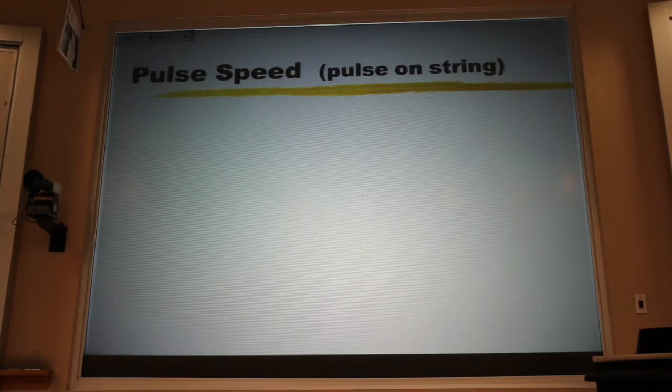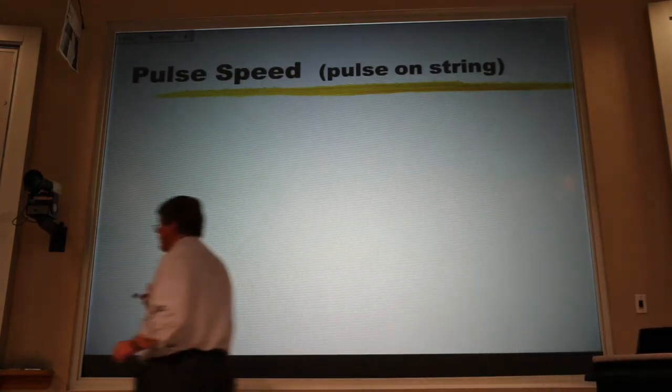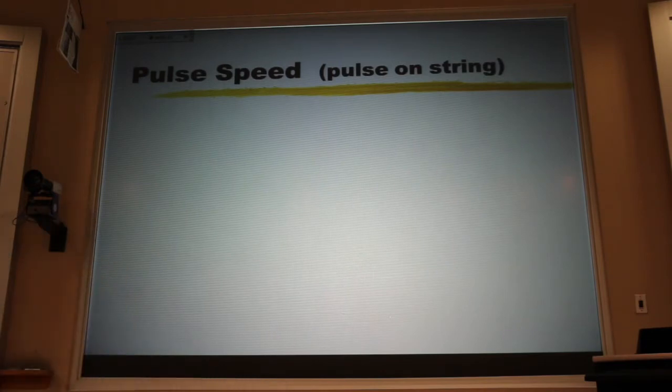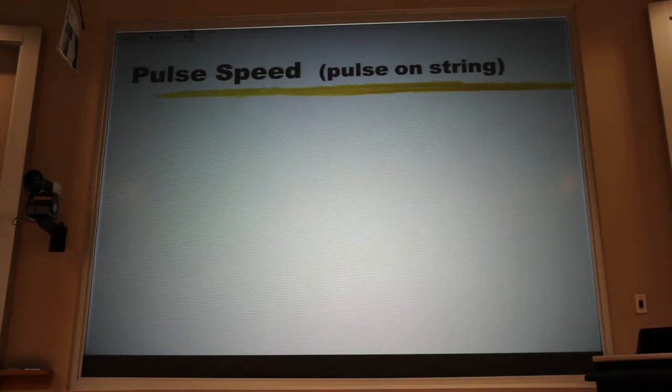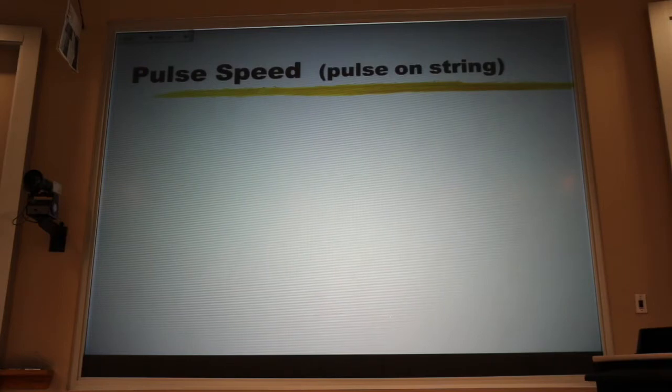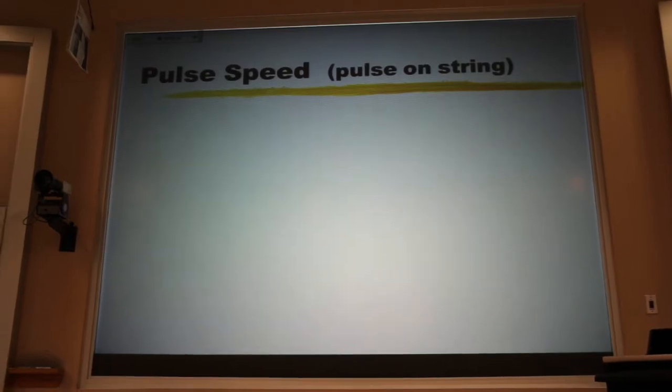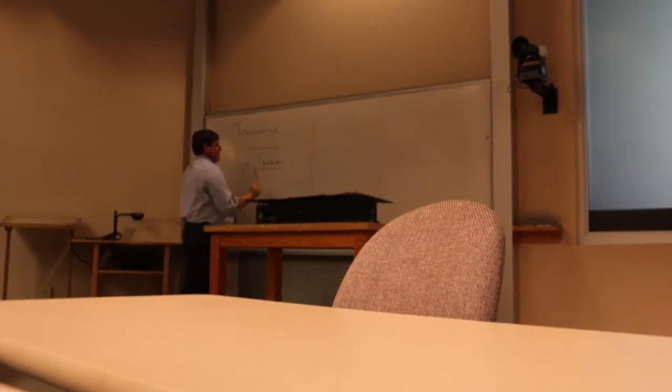Now, let's remind ourselves where we've been. We were talking about pulse speed when last we met, and we found that for transverse pulses, as on a string or a spring or a rope, that speed only depended on the tension and the mass density.